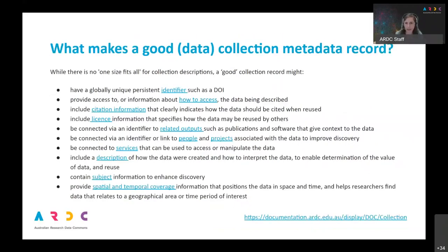To give you a taste of the guidance we provide: when we talk about what makes a good data description or collection metadata record, we'd be looking for a persistent identifier like a DOI on that dataset. The metadata should provide access to, or information on how to access, the data being described. There should be citation information — I showed you how that displays in a record — so people know how to cite your dataset when they reuse it. A license will tell people wanting to reuse the data if and how they may do so.